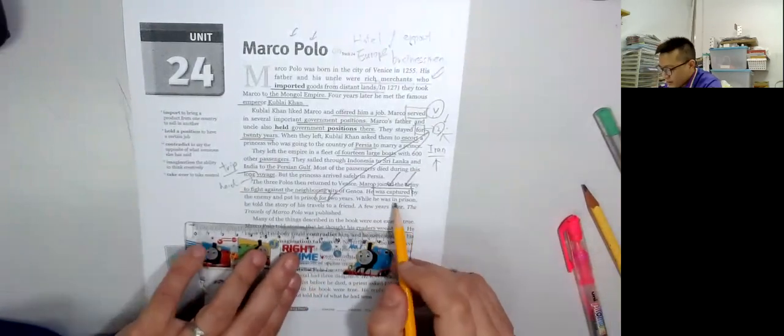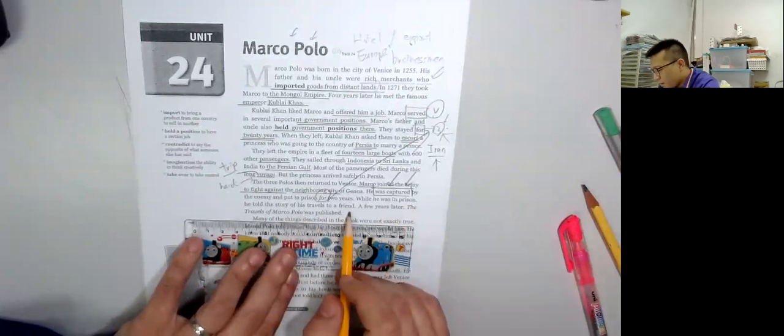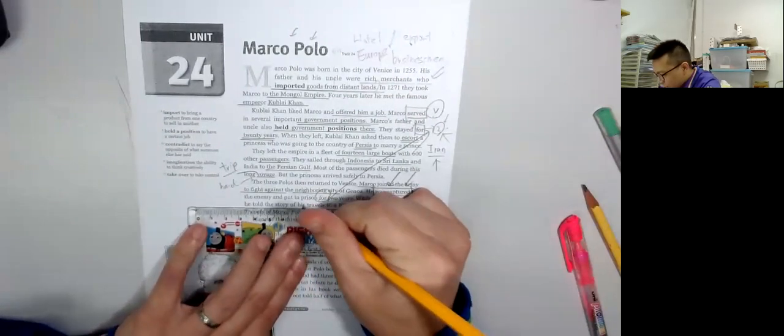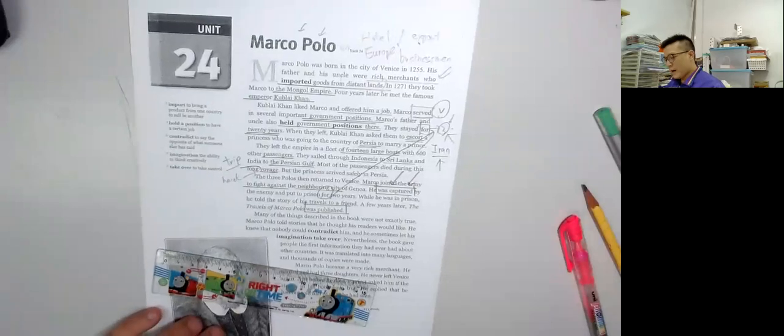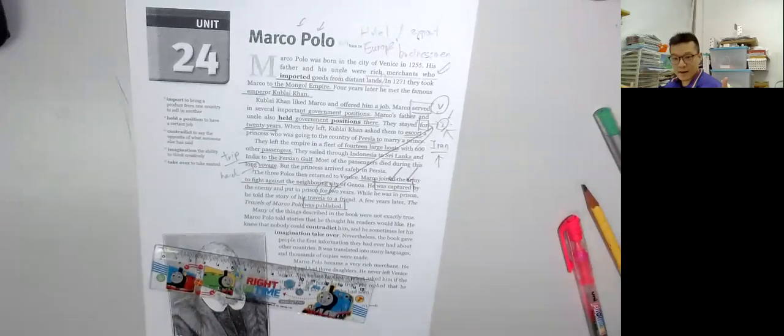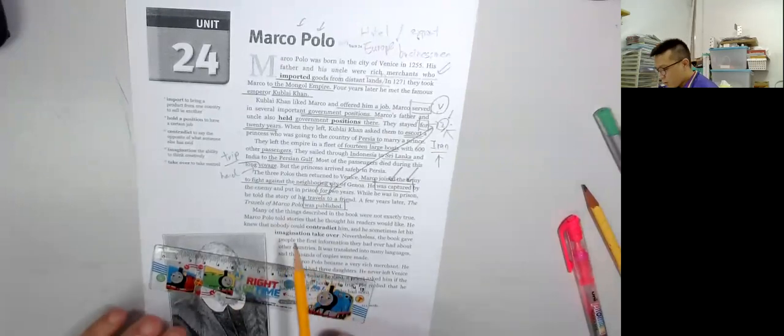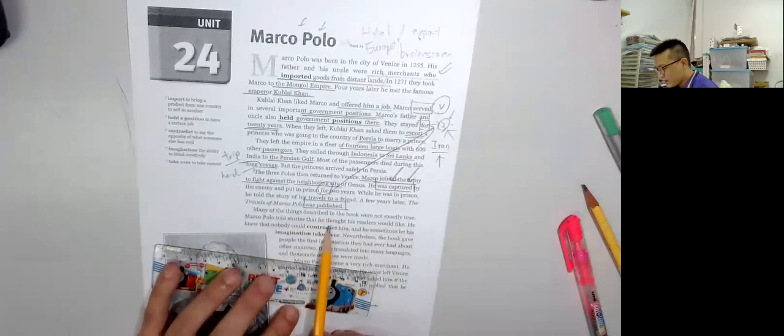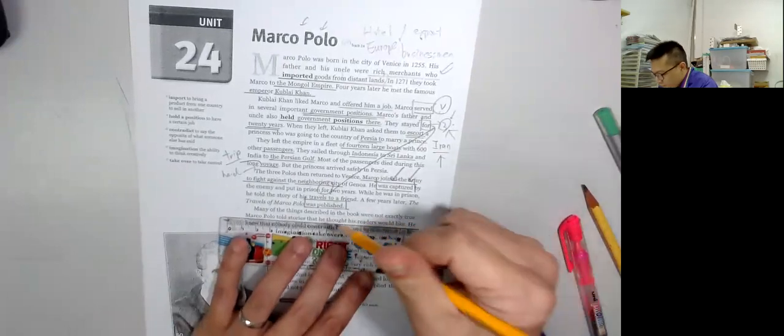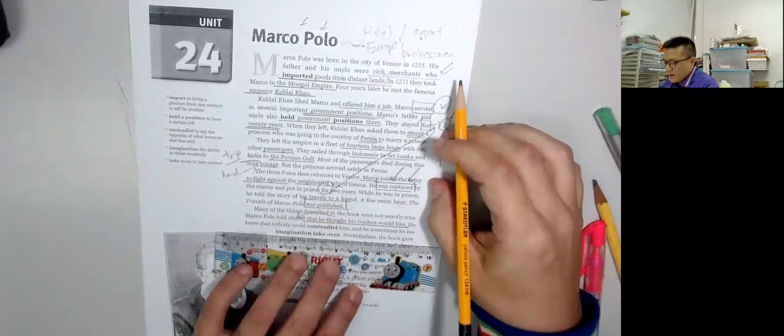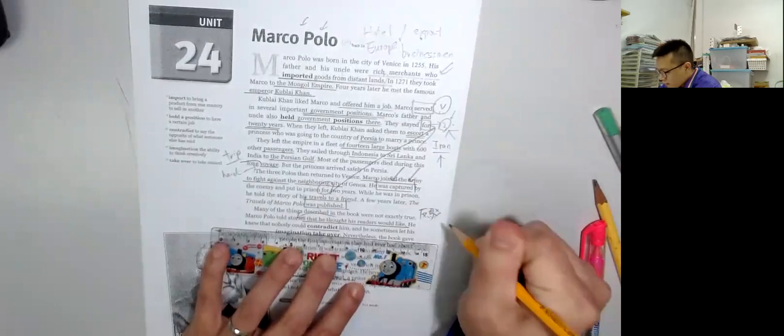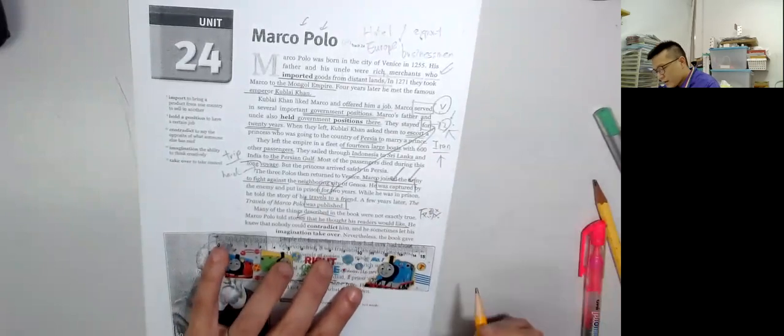Although he was in prison, he told the story of his travel to a friend. A few years later, The Travels of Marco Polo was published. The most famous book was written when he was in jail. Most of the things described in the book were not exactly true. Marco Polo told the stories that he thought his readers would like. He knew that nobody could contradict him. He sometimes let his imagination take over.